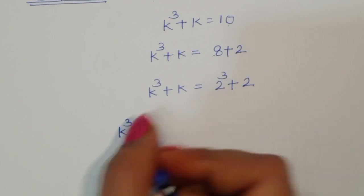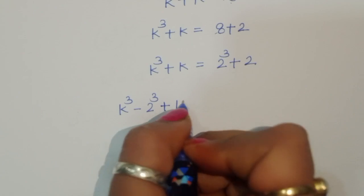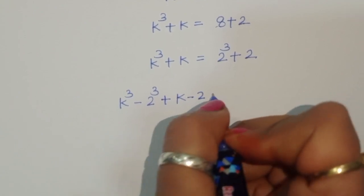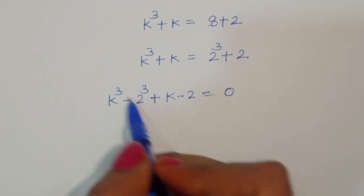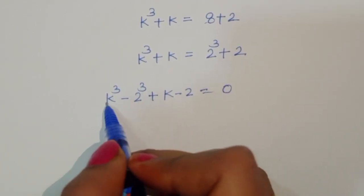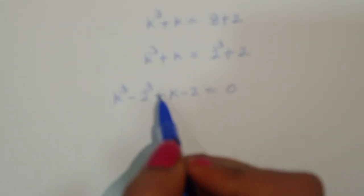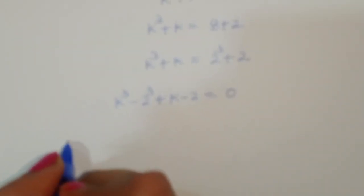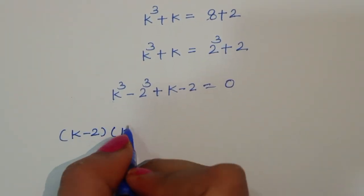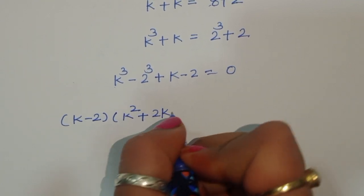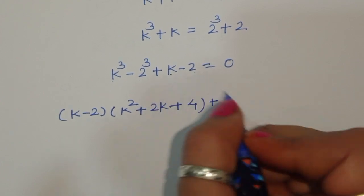Rearranging: k cubed minus 2 cubed plus k minus 2 equals 0. This is the form of a cubed minus b cubed, so we can apply the difference of cubes formula. That gives us: (k minus 2)(k squared plus 2k plus 4) plus (k minus 2) equals 0.